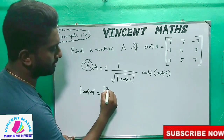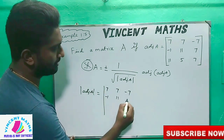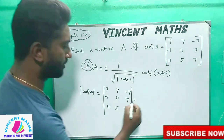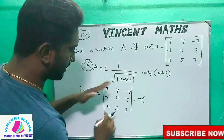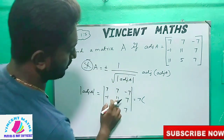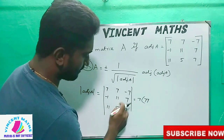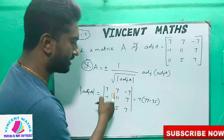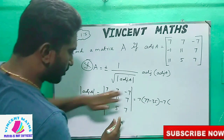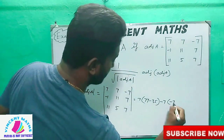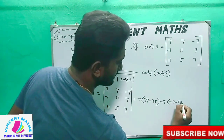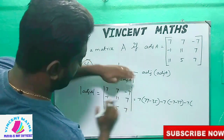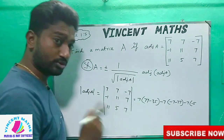The A matrix entries are: 7, 7, 7, 7, 7, 7, 7, 7, 7, 7, 7, 7 — we are filling in the matrix row by row with these values.